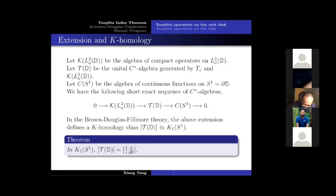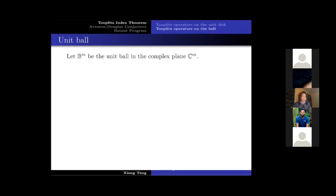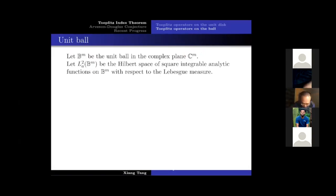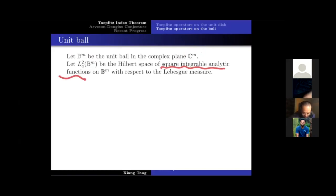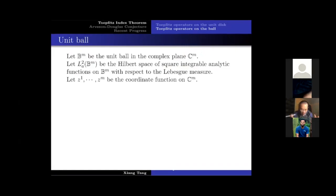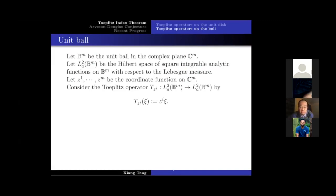Now we generalize from the disk to higher dimensions to introduce the Arveson-Douglas problem. We have the complex m-dimensional ball Bm in Cᵐ, with real dimension 2m. We can talk about the Bergman space — the Hilbert space of square-integrable analytic functions on the ball. Now we have several variables z₁, z₂, ..., zm, and m multiplication operators. We have that Tzi commutes with Tzj, since multiplication operators commute.